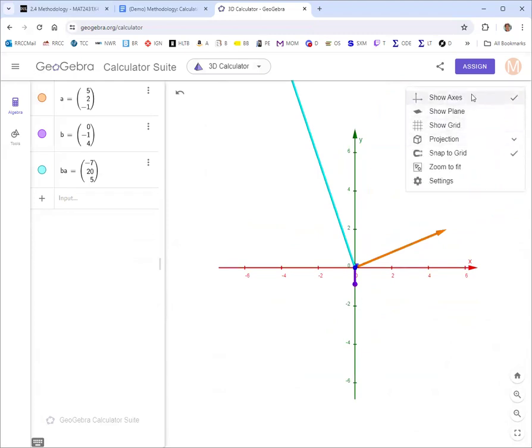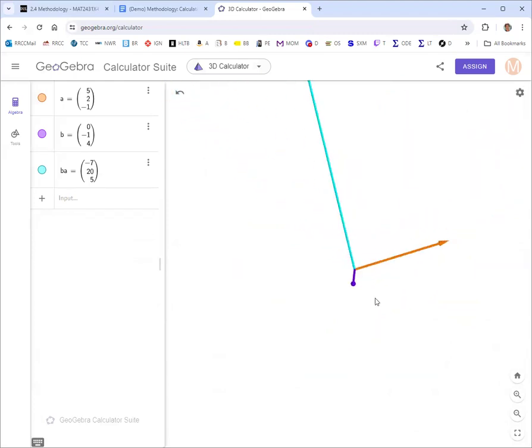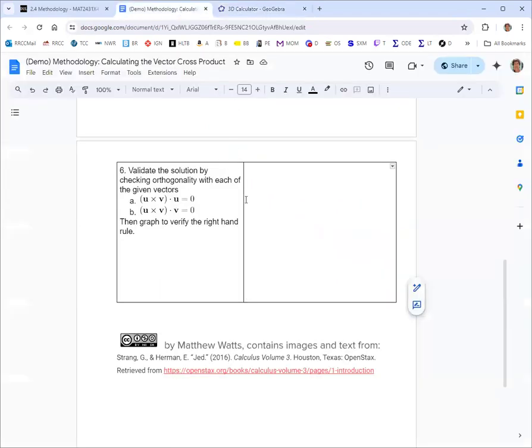So that looks like a nice right-handed triple. Again, the b and a aren't supposed to be a right angle, so it doesn't look exactly like that, but it looks pretty good. All right, that should do it for calculating the cross product. I'll move on to the fill in the blanks in your return examples.